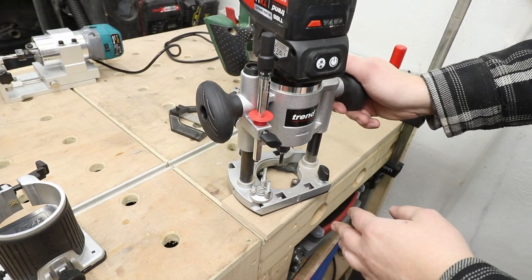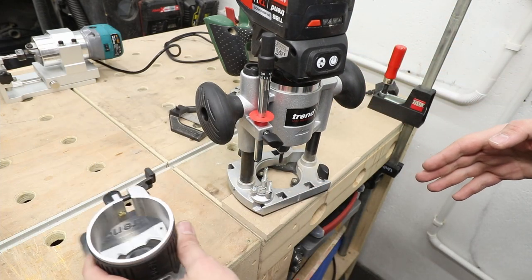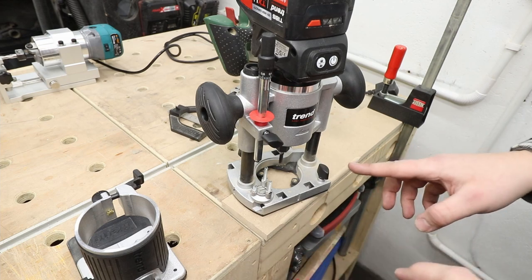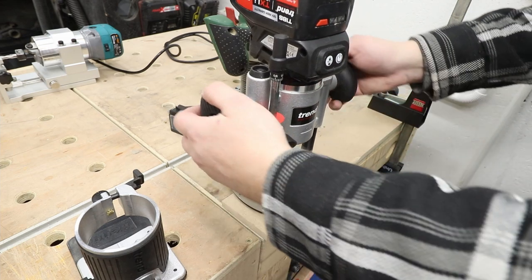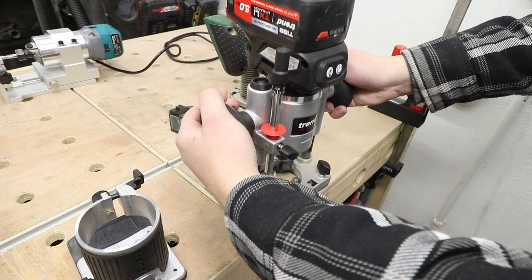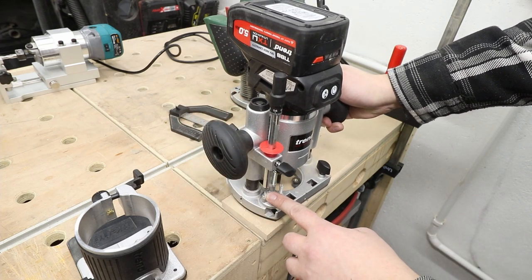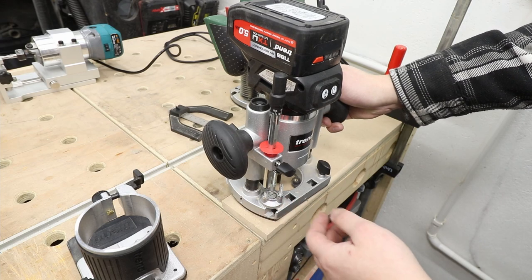Now I'm going to show you a bit of freehand routing with a plunge base and the fixed base, and I'll show you the difference in how you actually operate them. So with a plunge base, you make the plunge to the correct depth, make sure you've got the depth stop set up, and just make the cut.